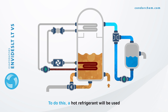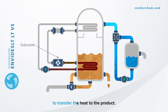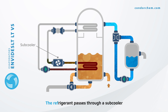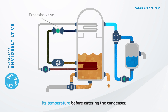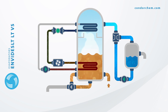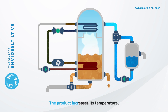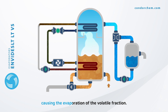To do this, a hot refrigerant will be used to transfer the heat to the product. The refrigerant passes through a subcooler and an expansion valve to reduce its temperature before entering the condenser. The product increases its temperature, causing the evaporation of the volatile fraction.